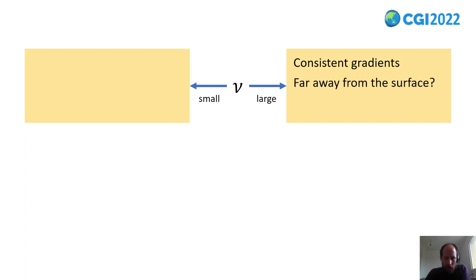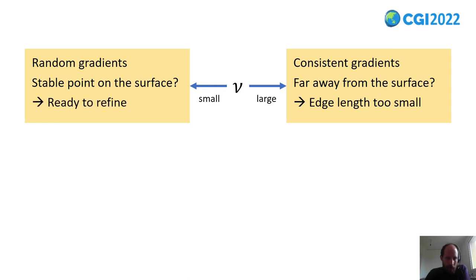This is because we may be far away from the surface. Actually, we don't know the distance, but it could be a good time to increase the triangle size or edge length. On the other hand, if nu is small, this is because we observe random gradients. That means we are on a stable point and we may be on the final surface. So that could be a good time to decrease the triangle size.